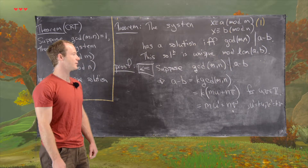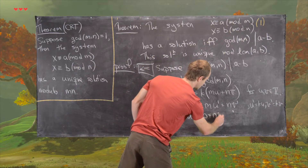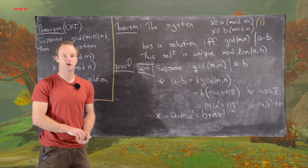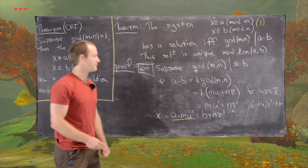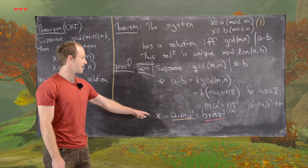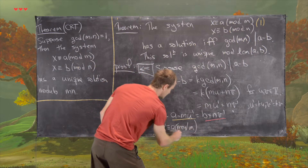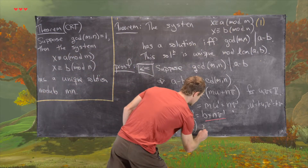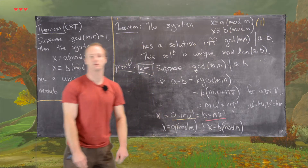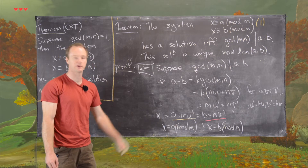Now notice that A minus M·U′ equals B plus N·V′. If we let X equal this common quantity, we have two representations: X equals A minus M·U′ and X equals B plus N·V′. Reducing the first modulo M gives X is congruent to A mod M, since M·U′ is a multiple of M and thus zero. Reducing the second modulo N gives X is congruent to B mod N. So we've proven that if the divisibility condition holds, we can construct a solution.